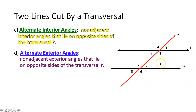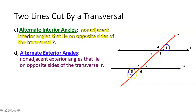Alternate exterior angles are non-adjacent exterior angles that lie on opposite sides of transversal T. They can't be right next to each other like 5 and 6; they're on the outside of lines L and M and on opposite sides of the transversal. Two alternate exterior angles would be angles 5 and 1. Same with angles 6 and 4 — not adjacent, on opposite sides of the transversal, and exterior.